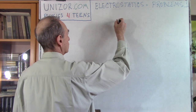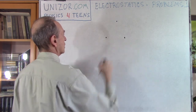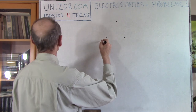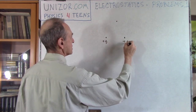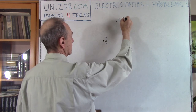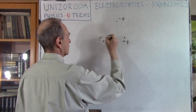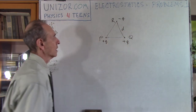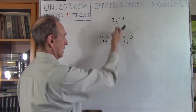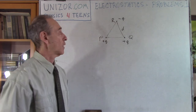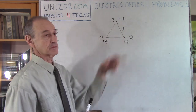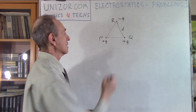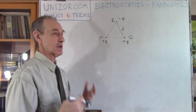My first problem: you have an equilateral triangle, and at each vertex there is a charge — a point object charged with Q positive at point P, the same at Q, and the third one is negative of the same magnitude at point R. This is an equilateral triangle with side equal to D. Obviously, these two positive objects are attracting the negative one at point R. My question is: what is the force which this particular object experiences as a result of these two forces?